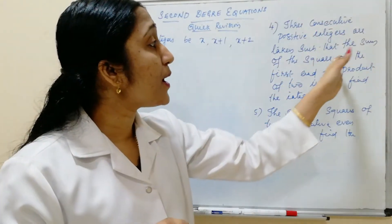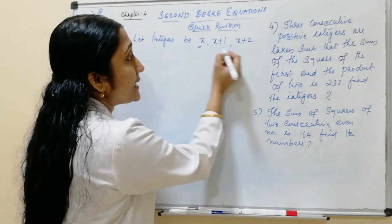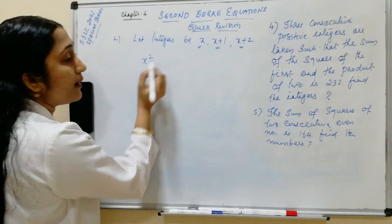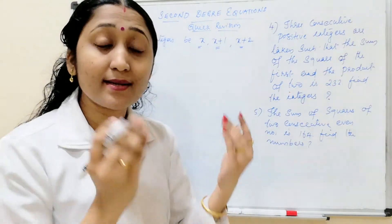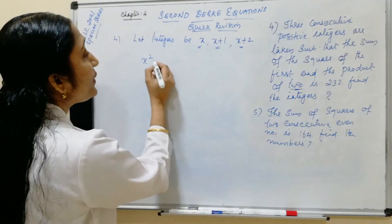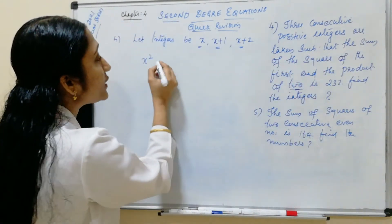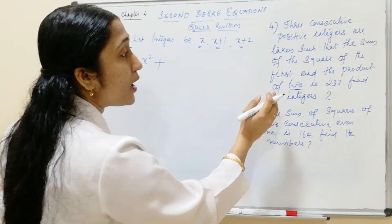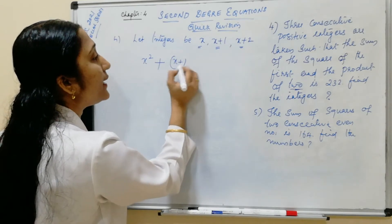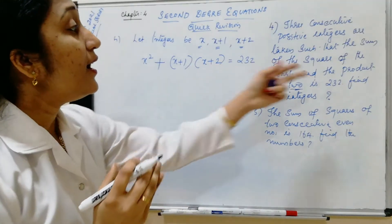According to the condition, the sum of the squares of the first — so x squared — and the product of the other two, which means x plus 1 into x plus 2, is equal to 232. This is the equation given.